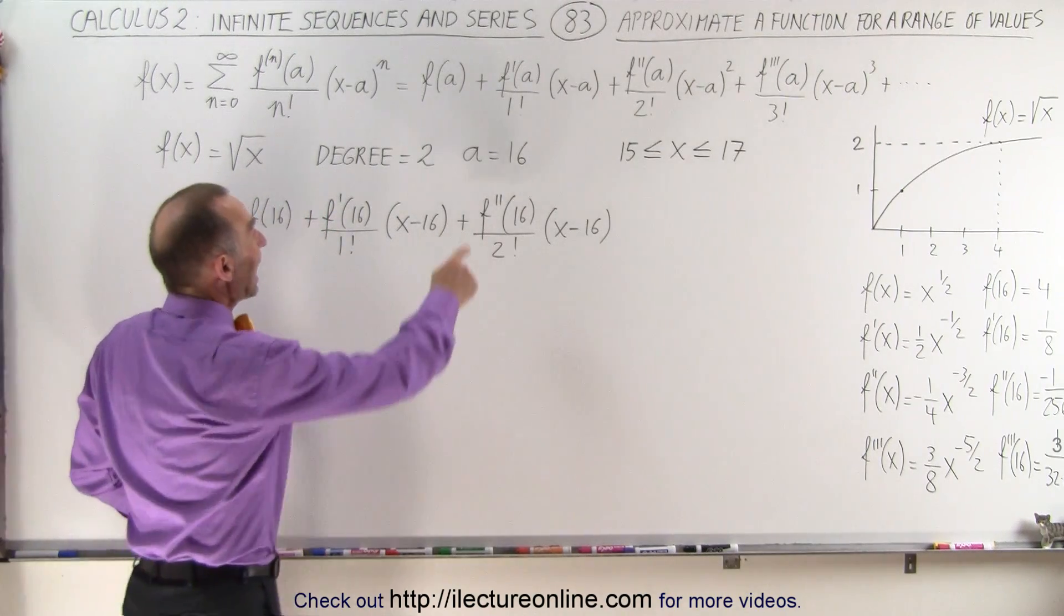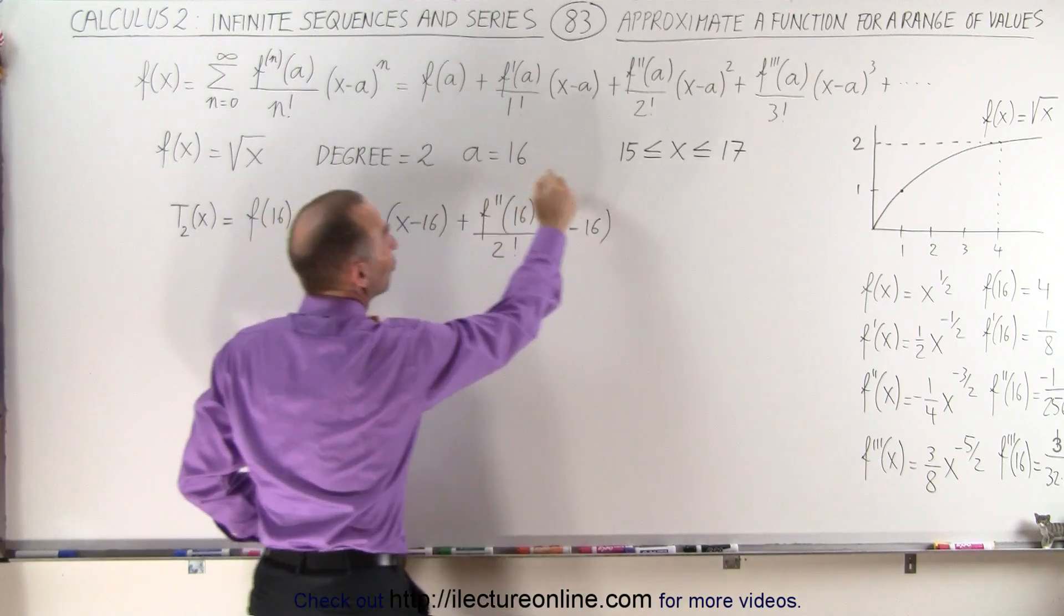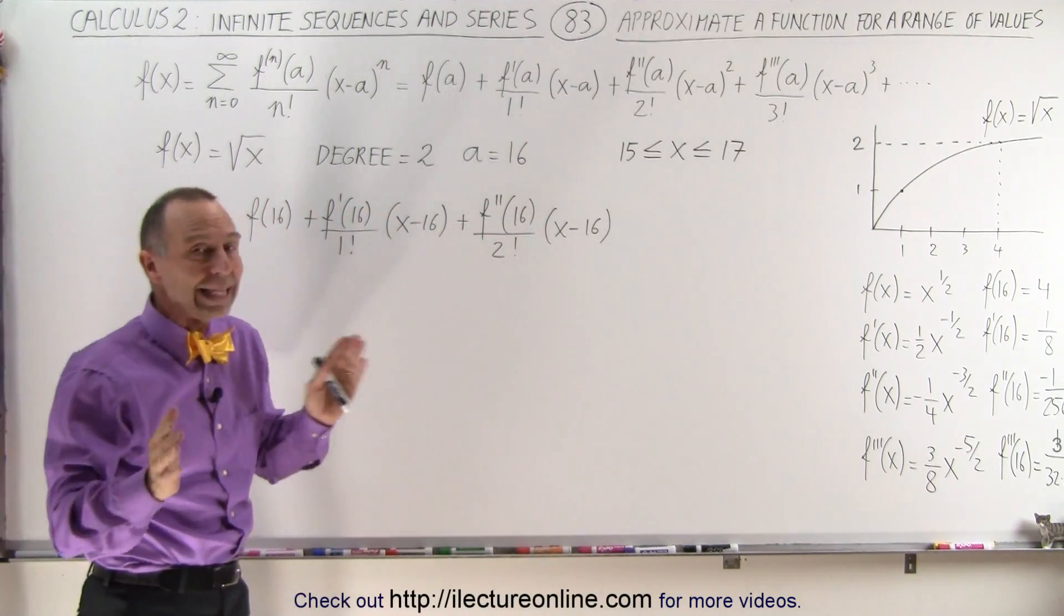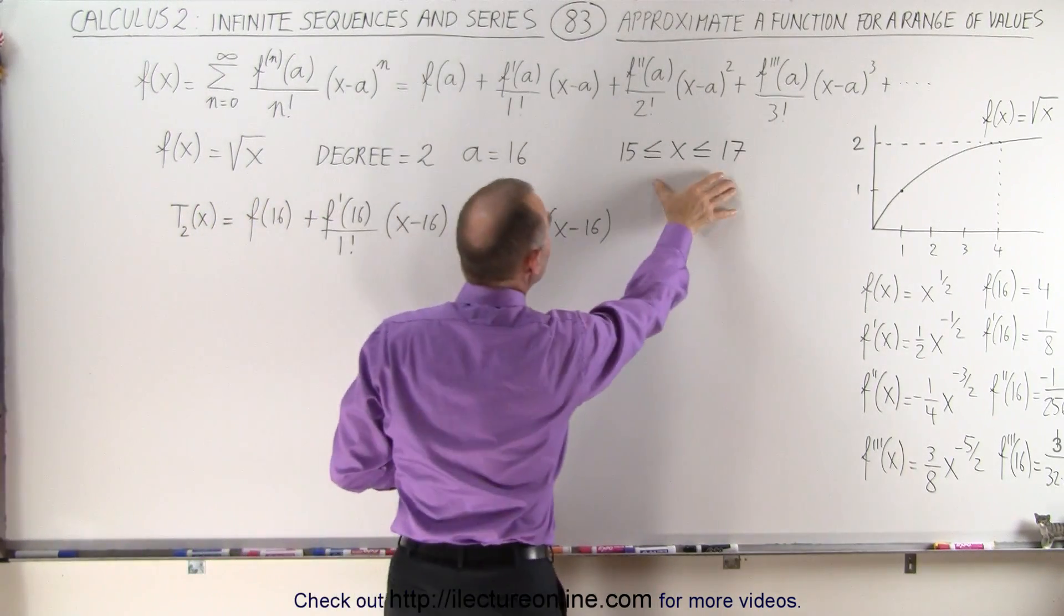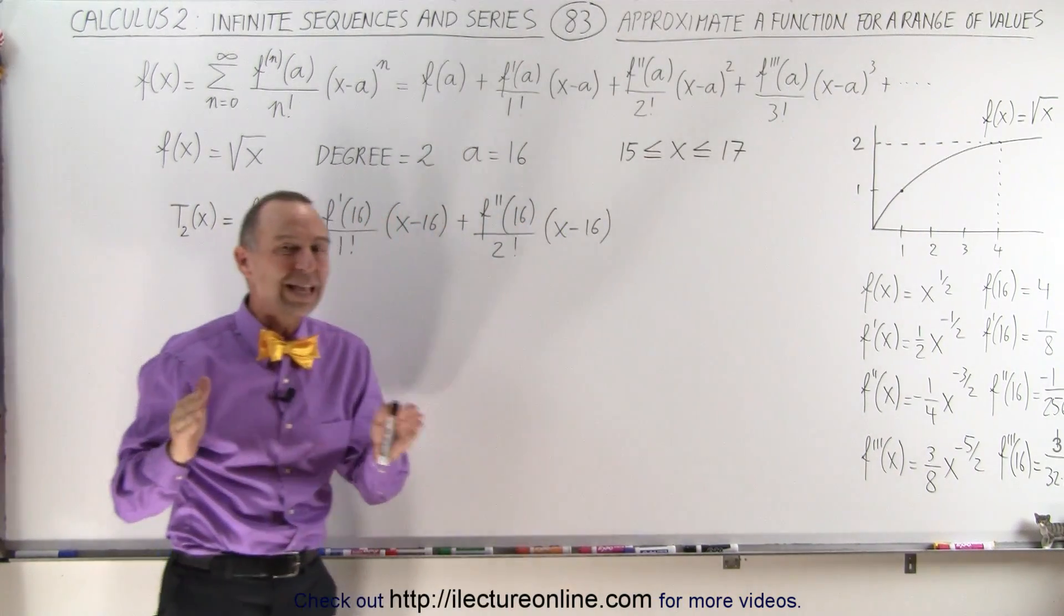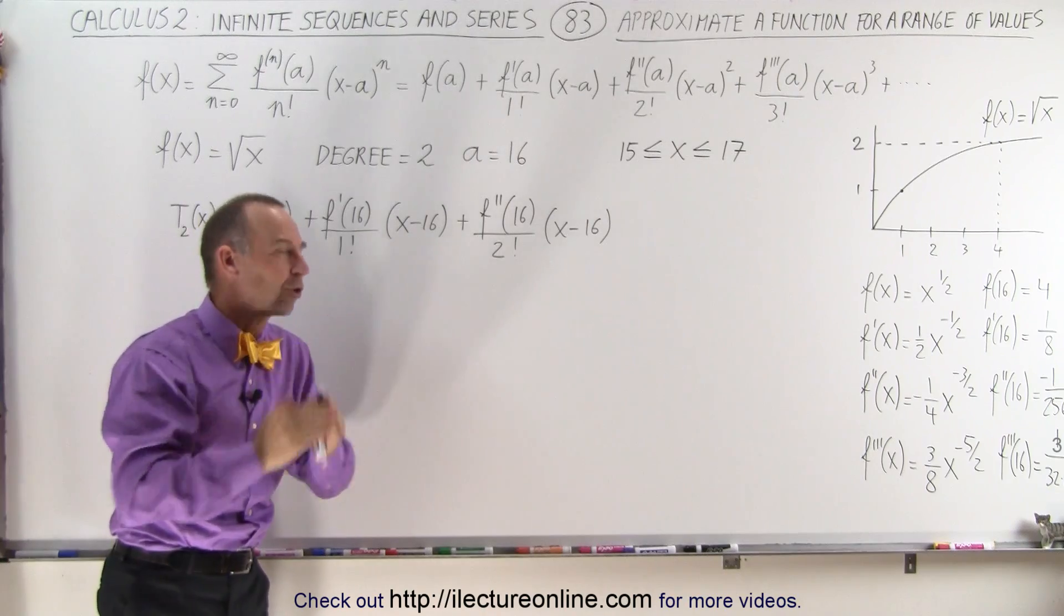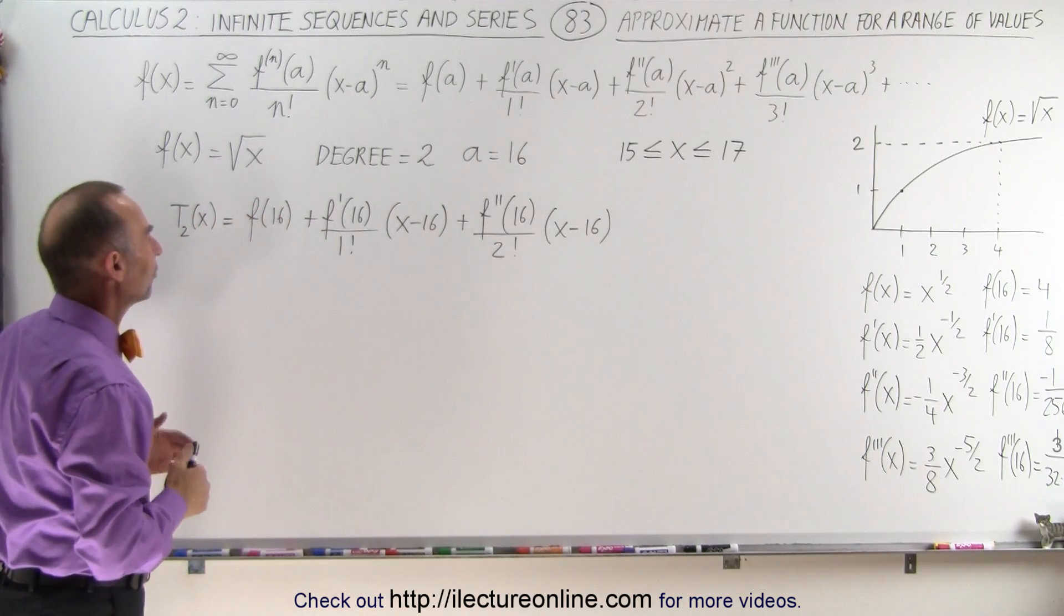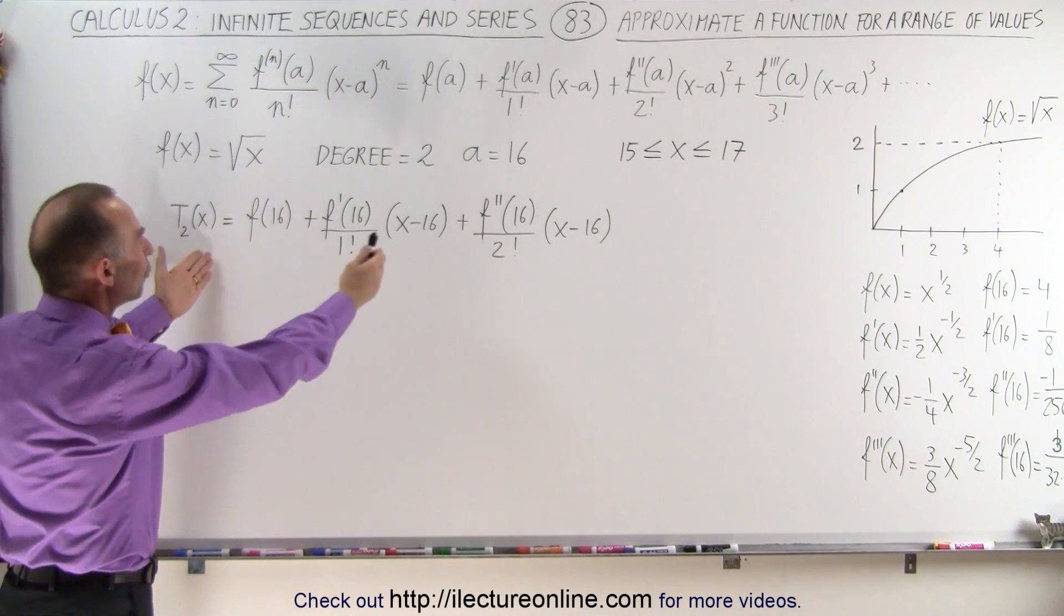We're going to let a equals 16, which falls right in the middle of that range, which means that either number 15 or 17 is not all that different from the number 16, so it shouldn't take very many terms to converge to the correct value. And so we can get away with just only using degree 2.